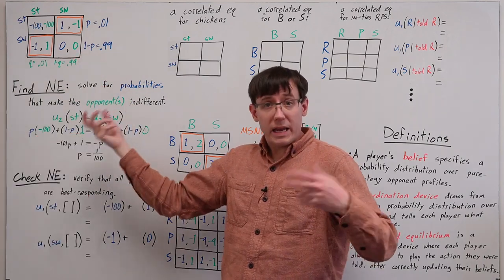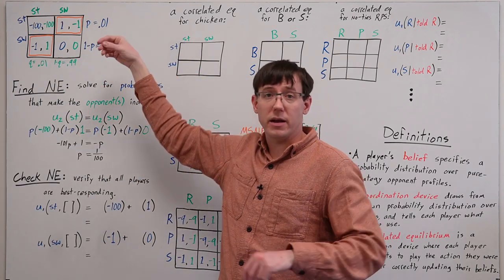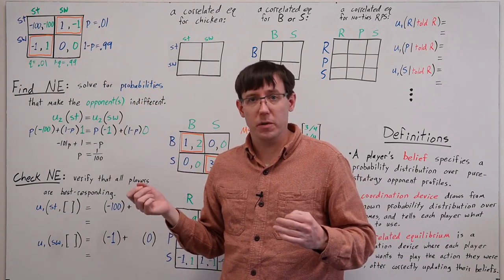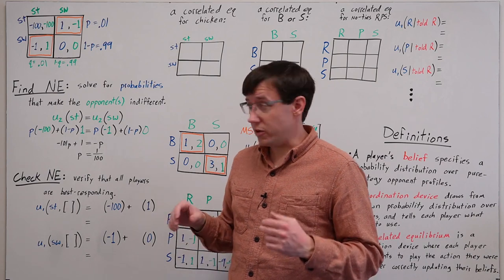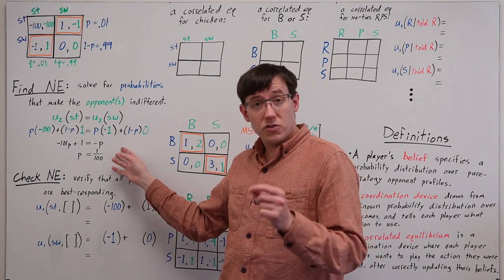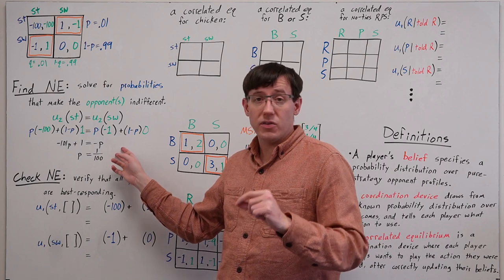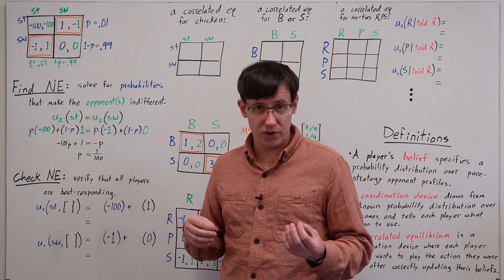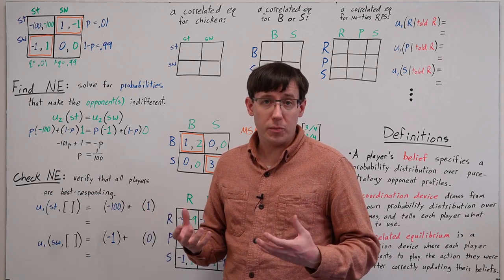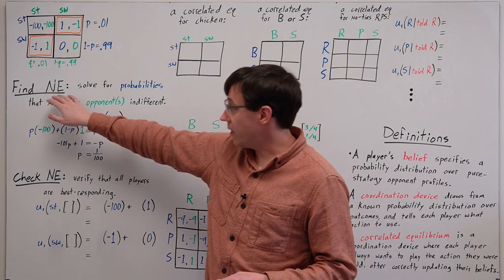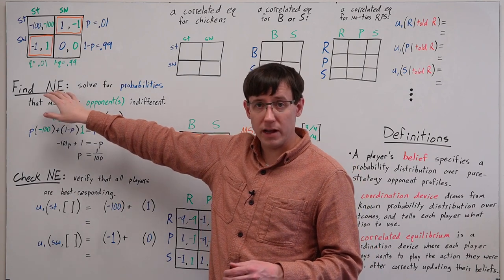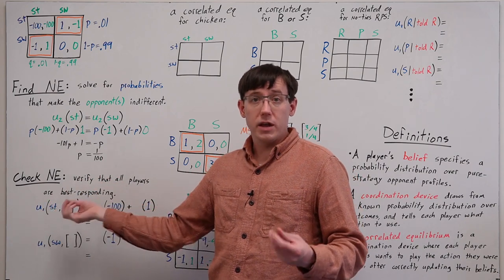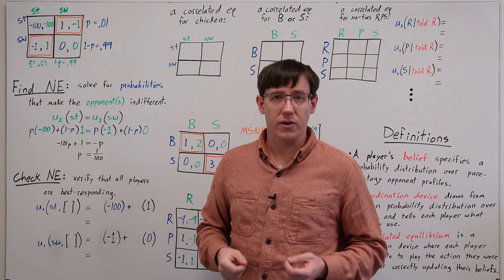When each player randomizes 1% straight and 99% swerve, we have a mixed strategy Nash equilibrium. As we'll see later in the semester, this process of solving for the probabilities that give us a Nash equilibrium gets much more complicated as we add more players and strategies. An alternate problem we'll often consider is: instead of finding a Nash equilibrium from scratch, if we are given a candidate Nash equilibrium, checking that it does in fact satisfy the conditions.